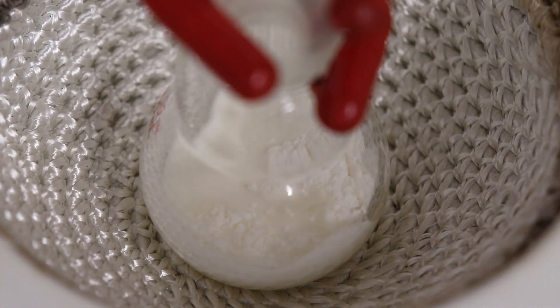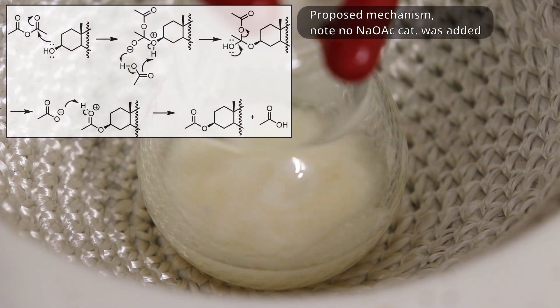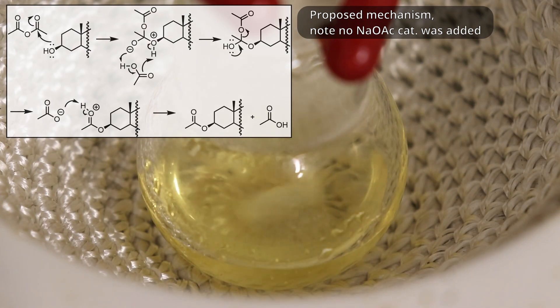At first, the mixture was unable to be stirred, but as it heated up, more cholesterol dissolved, freeing up the stir bar. And once the mixture got up to reflux temperature, it formed a clear yellow melt.